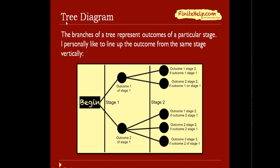So first let's go over the basics of a tree diagram. The branches represent the outcomes of a particular stage, and I personally like to vertically line up each stage to make it more organized. So here you can see branches representing possible outcomes of stage 1 and more branches branching off to represent outcomes of stage 2.